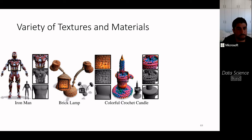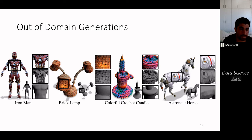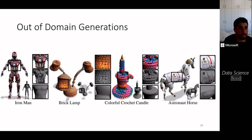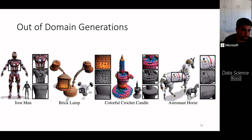Here is an example of a colorful crochet candle and an astronaut horse. The network never saw an example of an astronaut horse yet was able to imagine how such an astronaut horse would look. All these examples are 3D, so if you go to the website you can view them from different viewpoints as well.